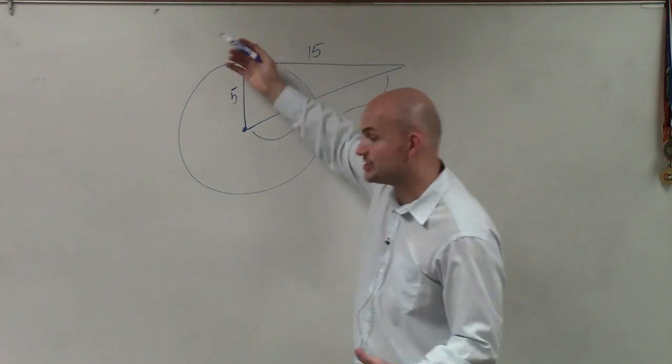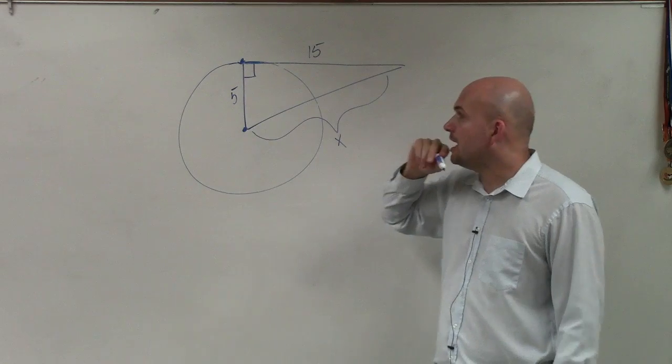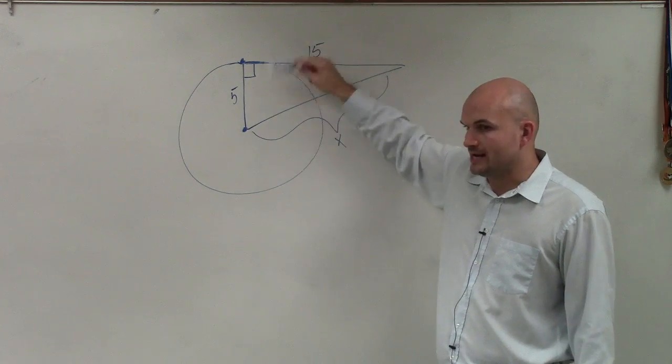We know that since this is tangent, it creates a 90 degree angle with the radius.